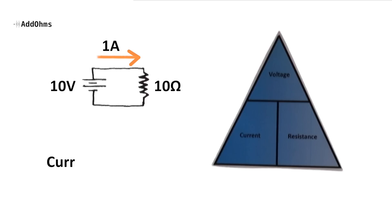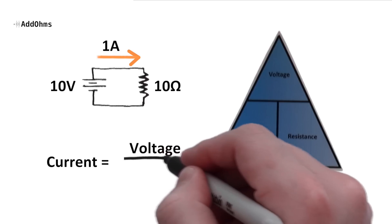So remember, the amount of current flowing through a resistor is calculated as voltage divided by resistance.